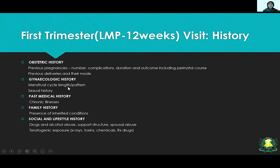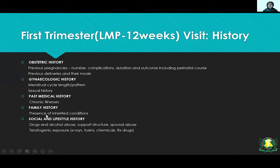Also take a gynecologic history — menstrual cycle length and pattern, and sexual history including multiple partners, which increases the risk of sexually transmitted infections. Then past medical history: any chronic illnesses like hypertension, medications being taken. Family history is important too — inherited conditions, hypertension, diabetes, cancer, thalassemia — all relevant history to evaluate risk factors.